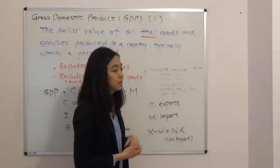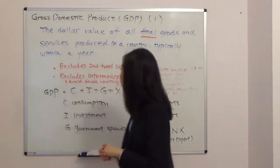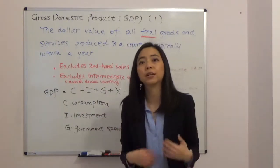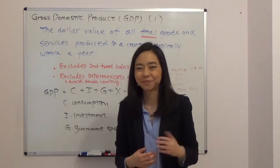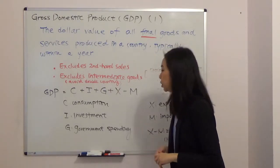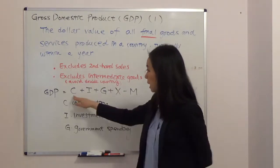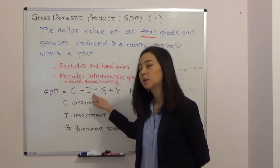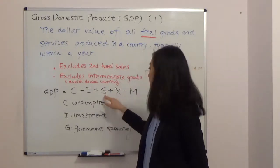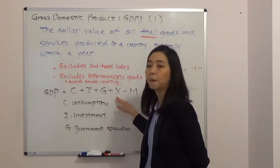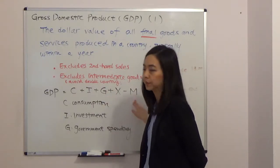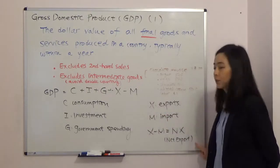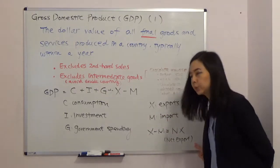We avoid all intermediate goods to avoid double counting, because we know the value of chocolate mousse already includes the value of sugar, eggs, and all the other ingredients. The components of GDP are: consumption plus investment plus government spending plus exports minus imports — and exports minus imports we can also call net exports.